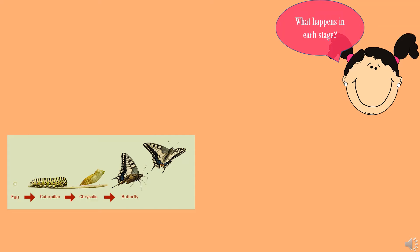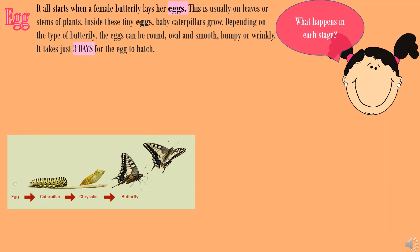The first stage is the egg stage. It all starts when a female butterfly lays her eggs, usually on leaves or stems of plants. Inside these tiny eggs, baby caterpillars grow. Depending on the type of butterfly, these eggs can be round, oval and smooth, bumpy, or wrinkly. It just takes three days for the eggs to hatch.